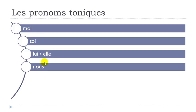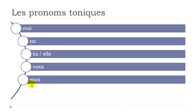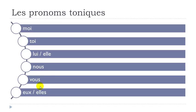Good news — same thing for the plural: NOUS and VOUS don't change from the pronom personnel. And for the third person plural, the masculine form changes and you get EUX — remember the final X is not pronounced. Then the feminine plural is ELLES. So let's see them all one more time: MOI, TOI, LUI, ELLE, NOUS, VOUS, EUX, ELLES.